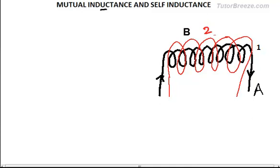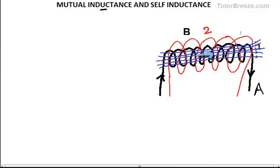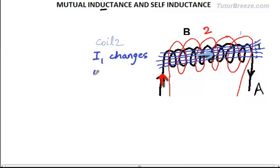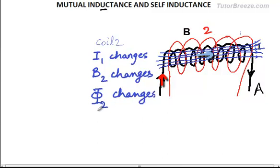Now if a current is flowing in the first coil, you know that there is a magnetic field, and the magnetic field lines will look like this. You can see that this magnetic field, which is due to current in coil 1, also passes through coil 2. So the magnetic field is also present in coil 2, and this field is present due to the current in coil 1. Now if the current in coil 1 changes, then the magnetic field through coil 2 changes, and if the magnetic field changes, the flux linked with coil 2 will also change.